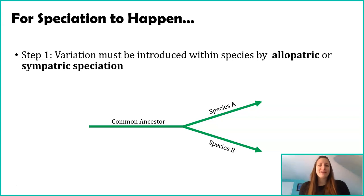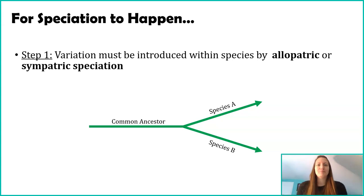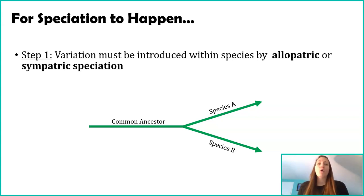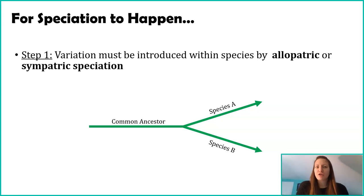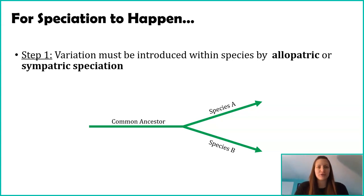We increase variation within the common ancestor, and we can do that through two different mechanisms: allopatric or sympatric speciation. I'll explain those more in a second. This image that you see, I actually encourage you to draw in your notes, because it's a really great representation on a very simple scale of how speciation is happening.